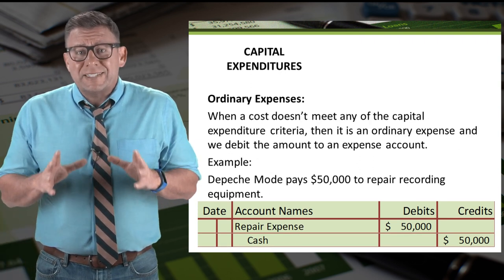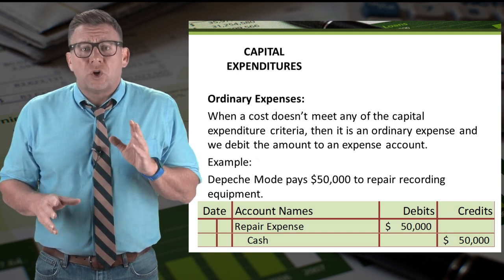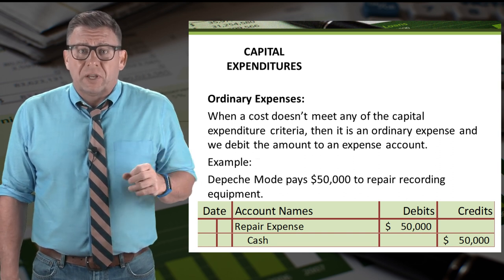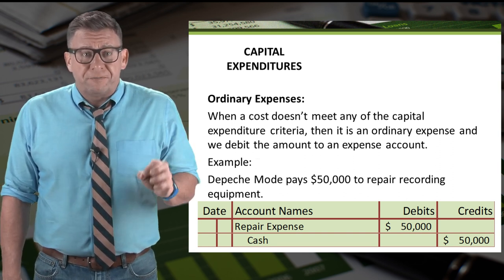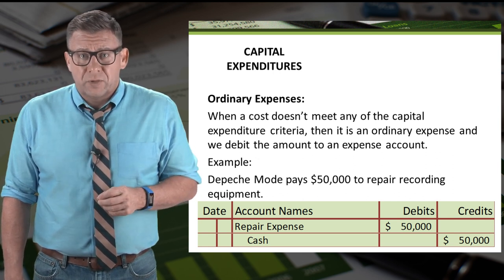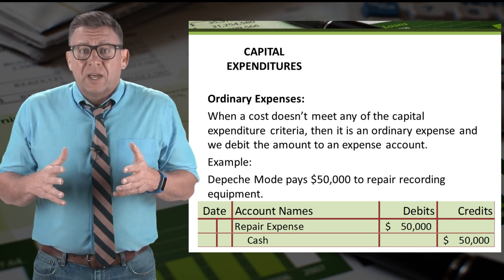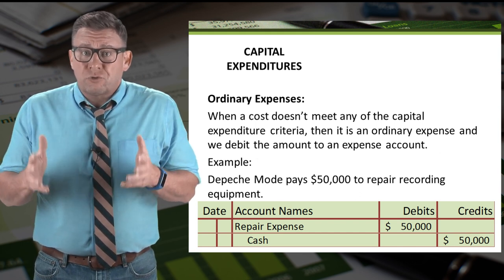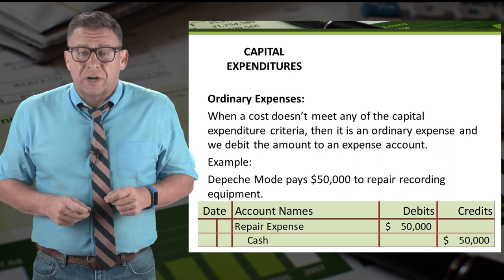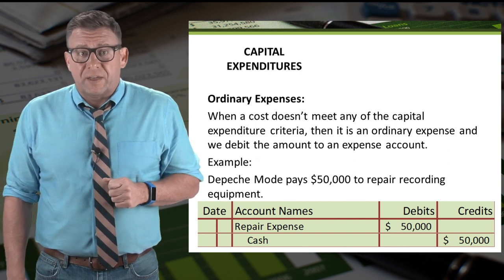When a cost doesn't meet any of the capital expenditure criteria, then it is treated as an ordinary expense. So let's look at this example again — Depeche Mode pays $50,000 to repair recording equipment. Let's assume the repair doesn't impact the recording equipment in any way, so it wouldn't be treated as a capital expenditure. This is an ordinary expense — we debit repair expense and credit cash for $50,000.